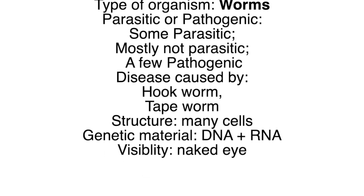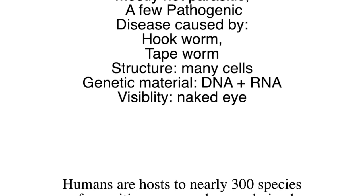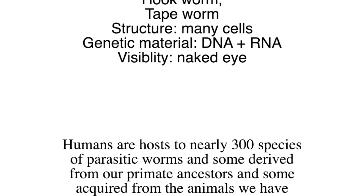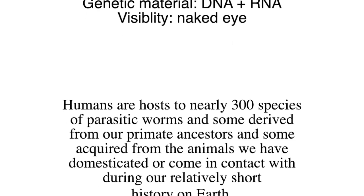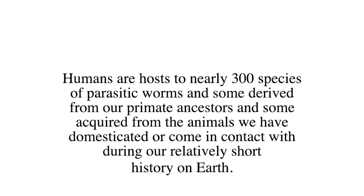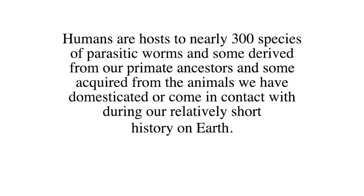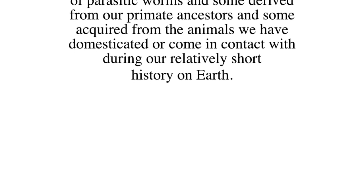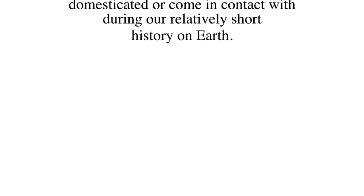Worms are many-celled and have genetic material — DNA and RNA — and are visible to the naked eye. Humans are host to nearly 300 species of parasitic worms, some derived from our primate ancestors and some acquired from animals we have domesticated or come into contact with during our relatively short history on earth.